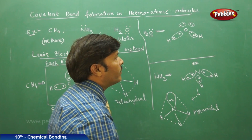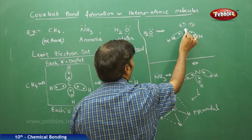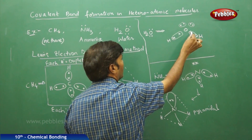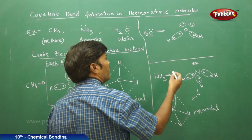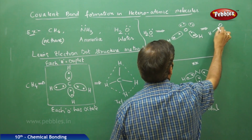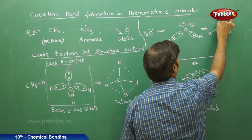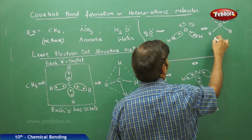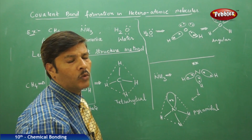Each hydrogen in the water molecule acquires duplet stability, while oxygen acquires octet stability — if you count the total electrons surrounding oxygen: two bond pairs plus two lone pairs equals eight electrons. The structure of water is V-shaped or angular, with two oxygen-hydrogen bonds and two lone pairs on oxygen not involved in bonding.